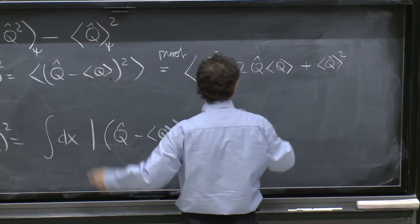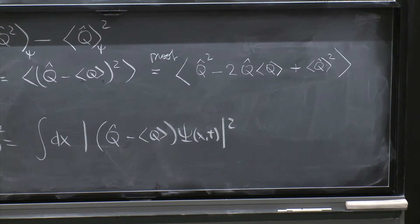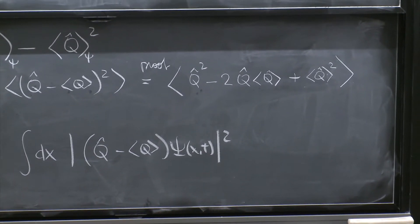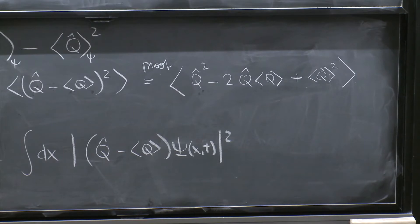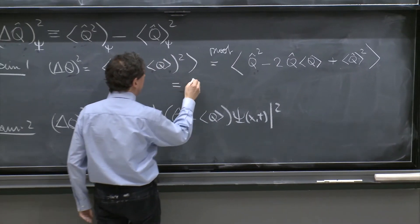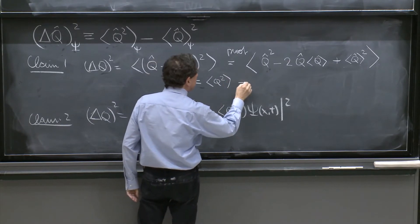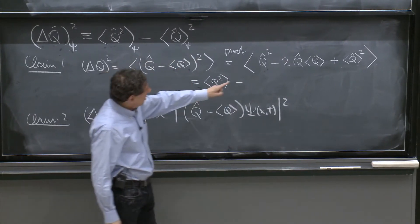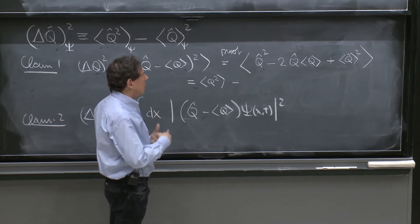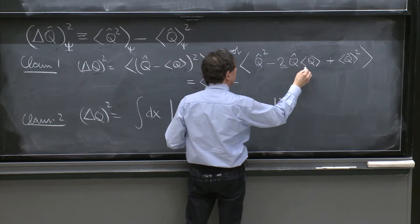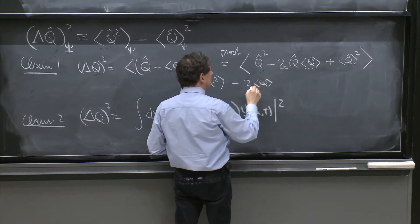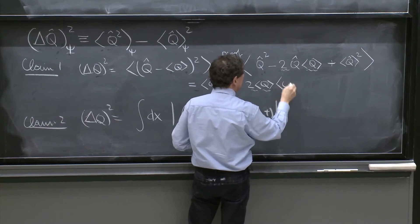And all this is the expectation value of the sum of all these things. The expectation value of a sum is the expectation value of the first plus the expectation value of the second, plus the expectation value of the next. So this is therefore the expectation value of Q̂ squared, minus the expectation value of this whole thing. But now, the expectation value of a number times an operator — the number can go out. So it's minus 2 times ⟨Q⟩ times the expectation value of Q, with the number factored out.